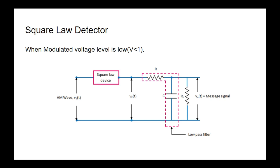When we pass the output of the square law device through the low-pass filter, we not only get the message signal but also get some DC component, and this DC component creates distortion in the message signal. To minimize the distortion we need the voltage of the modulated signal to be less than one, so this method is effective when the modulated voltage level is less than one.